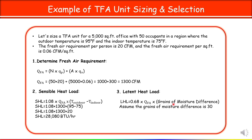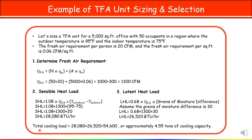Now calculate the latent heat load. To find the humidity ratio, you use the psychometric chart — enter any two properties and the chart or software gives you the remaining properties. Assuming a grain of moisture difference of 30: 0.68 × 1300 × 30 = 26,520 BTU per hour for latent heat. Adding both: total cooling load is approximately 54,600 BTU per hour, which equals about 4.55 tons of cooling capacity.